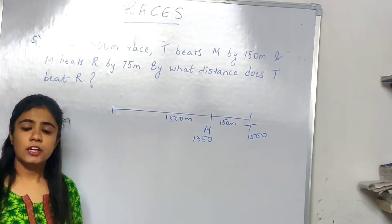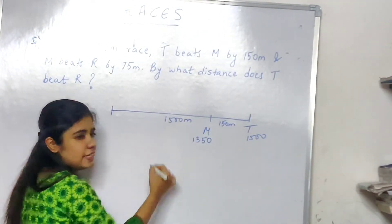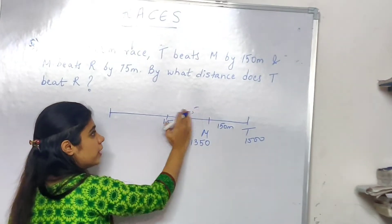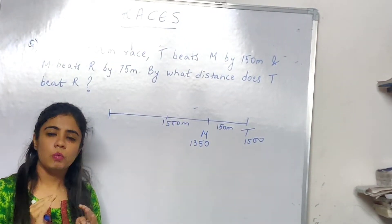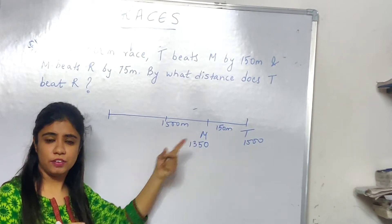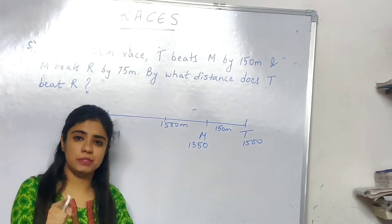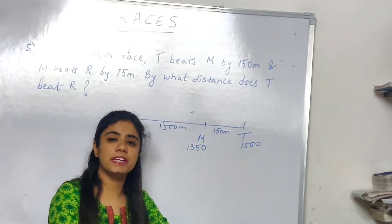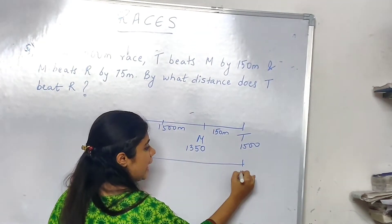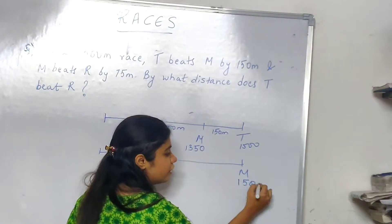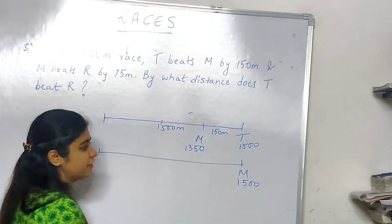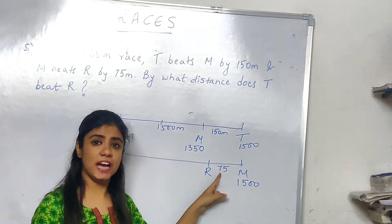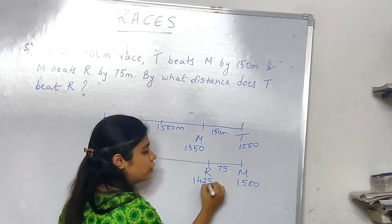They are also saying M beats R by 75 meters. Don't make the mistake of placing R at 75 meters behind M's position of 1350 during T's finish. When M was at the destination — at 1500 meters — R was 75 meters behind, so R was at 1425 meters. The gap of 75 applies when M finishes, not when T finishes.